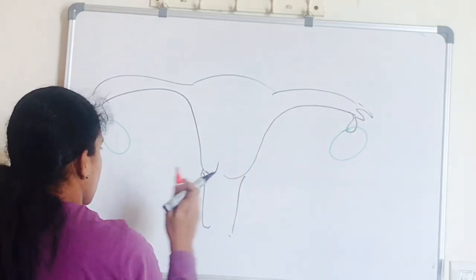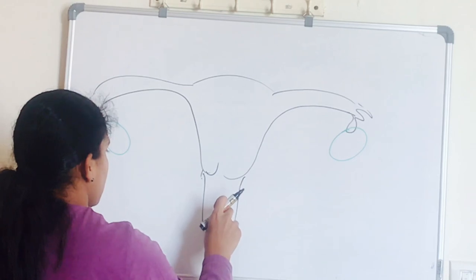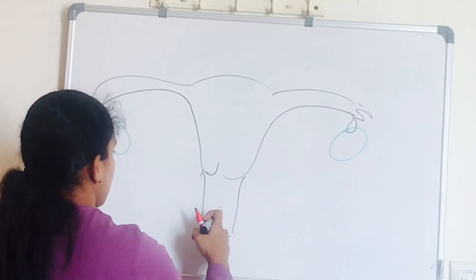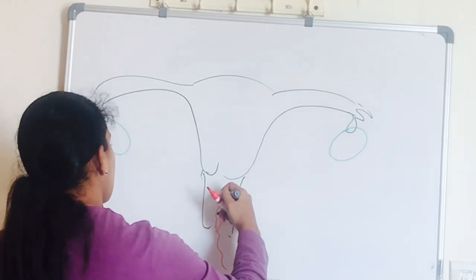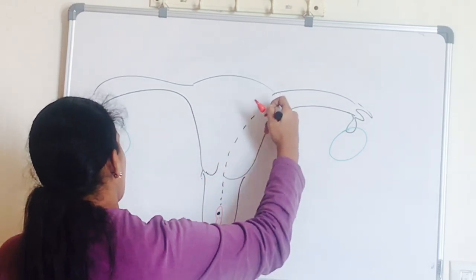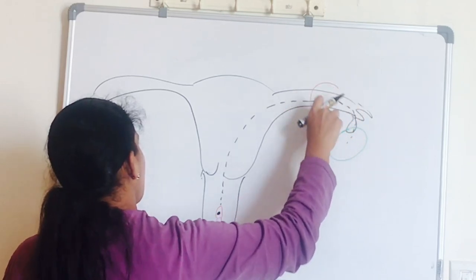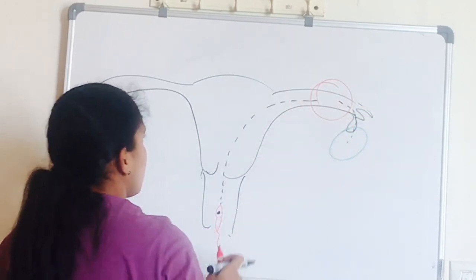Here this is uterus with ovary on both sides. When sperm enters the female reproductive organ, it meets the ova at ampulla of the fallopian tube. So this is the site of fertilization.